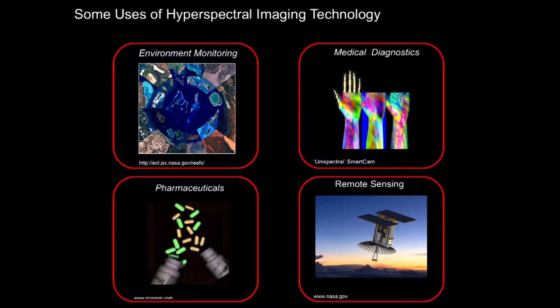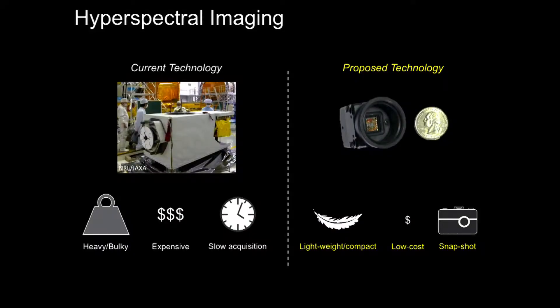Hyperspectral imaging can be used in a very large number of applications: environmental monitoring, agriculture, identifying pharmaceuticals, medical diagnostics, remote sensing, planetary science. There are many places where you want an image and want to know what the different parts of the image are — is the green I'm seeing a plant or a tarp? Is this pill fake or real? The current technology, such as this NASA hyperspectral imager, tends to be heavy, expensive, and the acquisitions tend to be slow. What we're going after is something very light, low cost, and done in a snapshot.